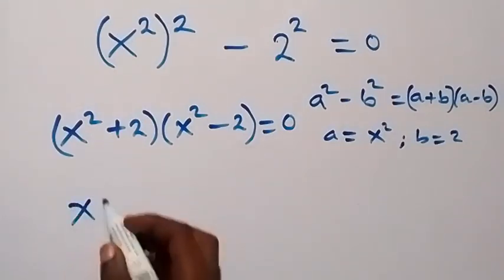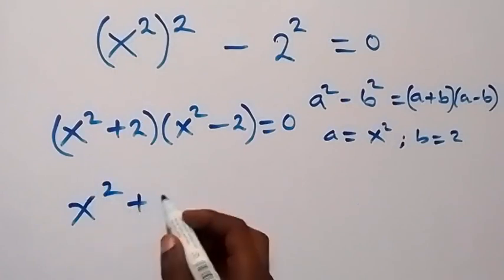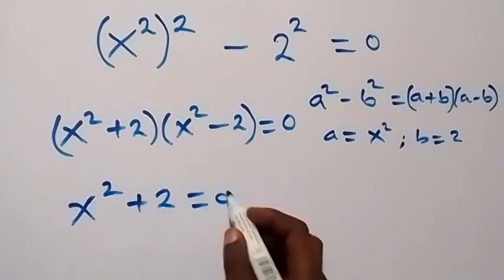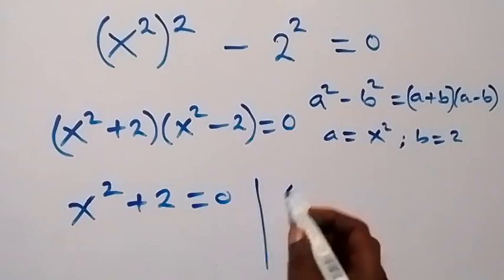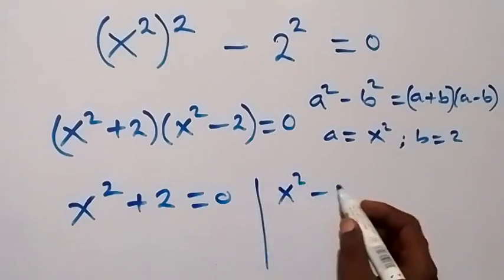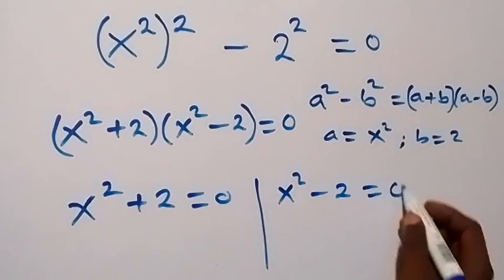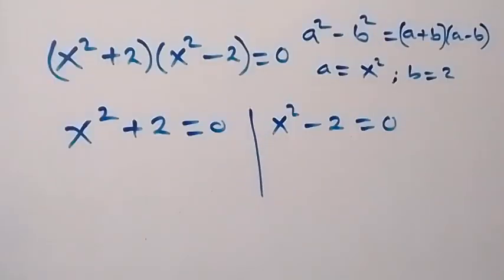We have 2 cases. The first we have x squared plus 2 equals to 0. Or we have x squared minus 2 equals to 0. Then from here,